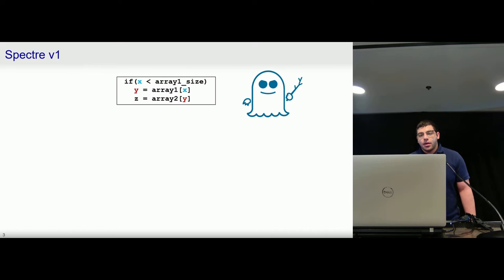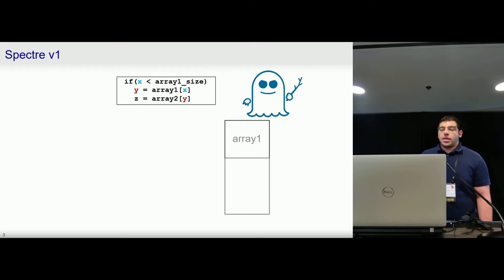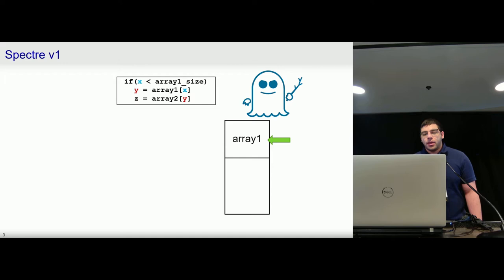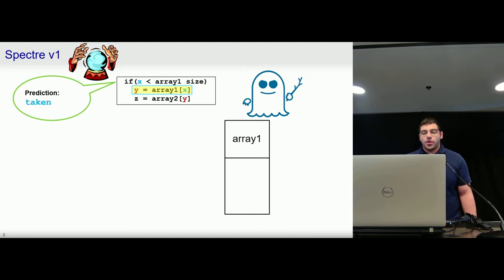For example, let's assume the following behavior in victim code: a nested array access within a conditional statement where the attacker has control over the variable X. We might think that all of our accesses must be in bounds because this conditional statement acts as a bounds check. But Spectre showed that we can send in values of X that will train the branch predictor to predict that the next value of X will be in bounds and that the branch should be taken.